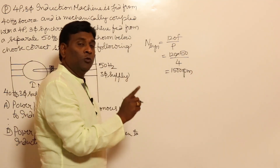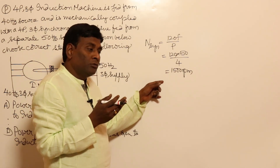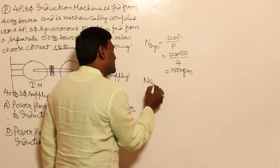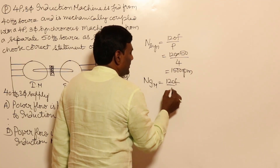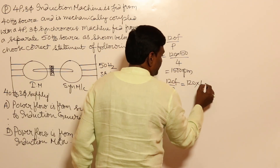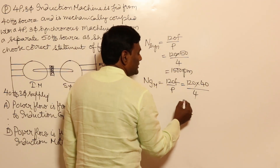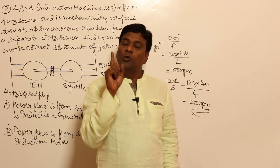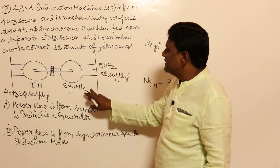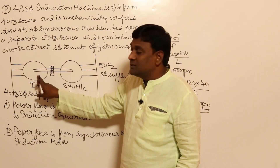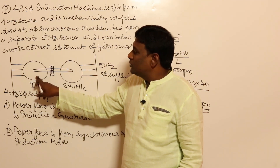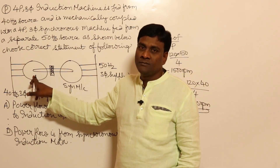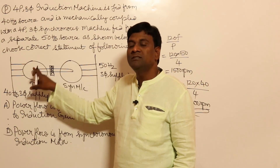The synchronous machine can only rotate at 1500 RPM. For the induction machine, its synchronous speed is NS = 120f/P = 120 × 40 / 4 = 1200 RPM. Since both machines are mechanically coupled, the induction machine also rotates at 1500 RPM. Its own synchronous speed is 1200 RPM, so it is rotating above its synchronous speed.